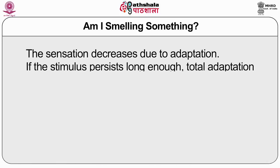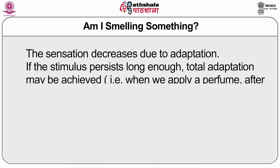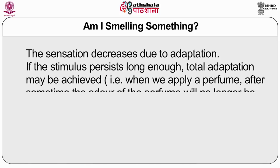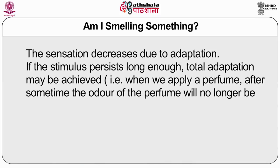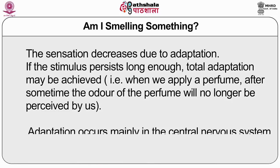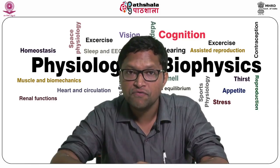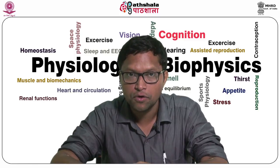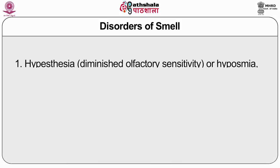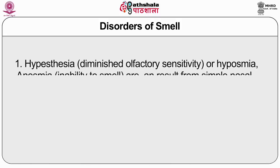If the stimulus persists long enough, total adaptation may be achieved. For example, when we apply a perfume, after some time the odor of the perfume will no longer be perceived by us, but it can still be perceived by others. Adaptation occurs mainly in the central nervous system and partly at the sensory cell level.